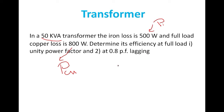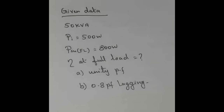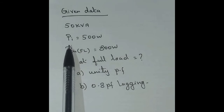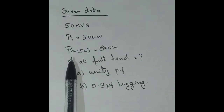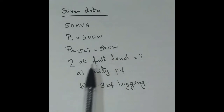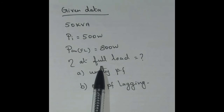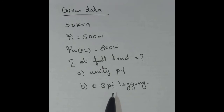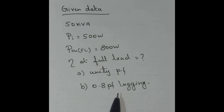We need to determine efficiency at full load, so n is equal to 1. We have to calculate efficiency at full load for unity power factor and 0.8 power factor lagging. The given data is: 50 kVA transformer, iron loss 500 watt, full load copper loss 800 watt.